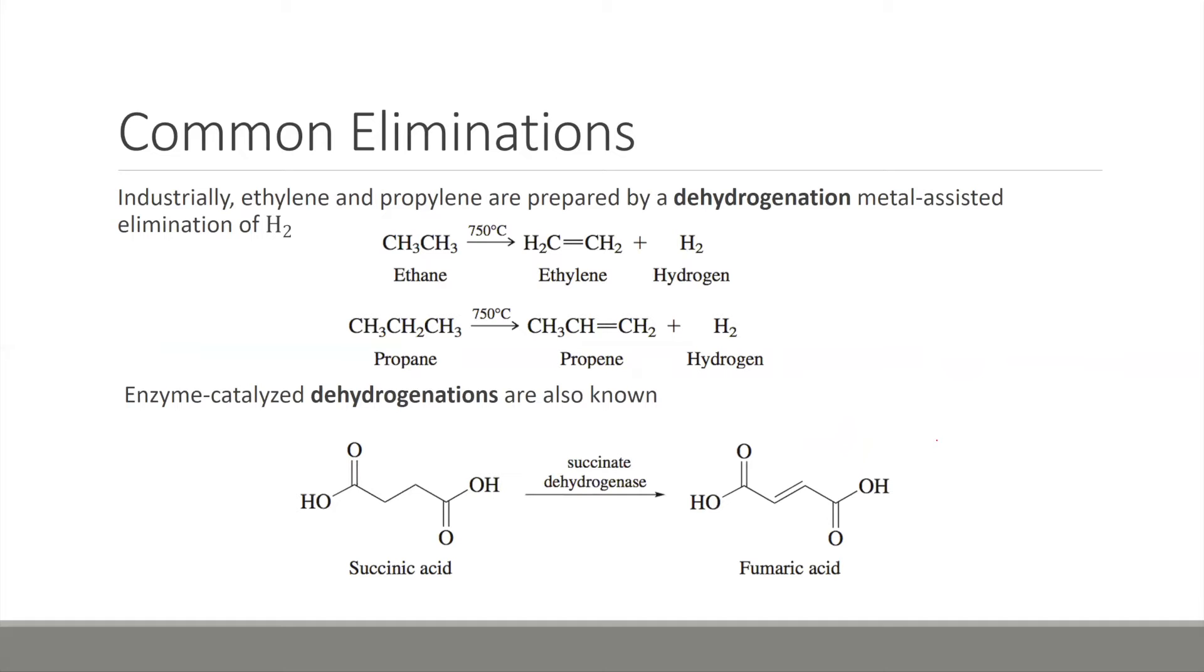For example, industrially, ethylene and propylene, these double bonds on an ethane or a propane, are prepared using a technique called dehydrogenation. Usually it is catalyzed with a metal, and we eliminate H2 as a gas.